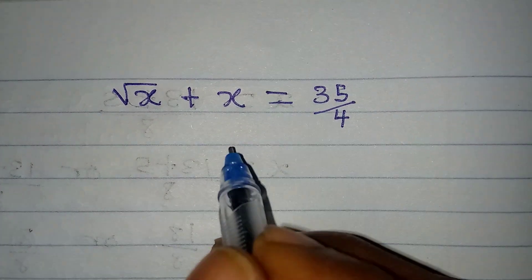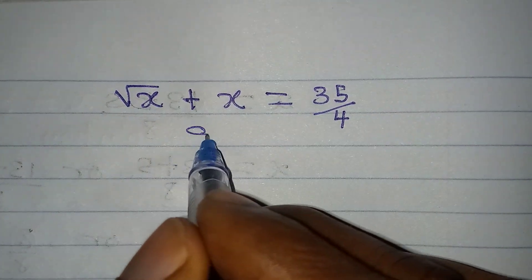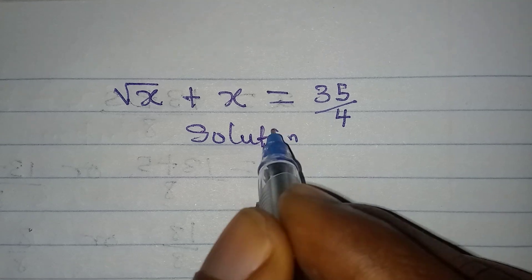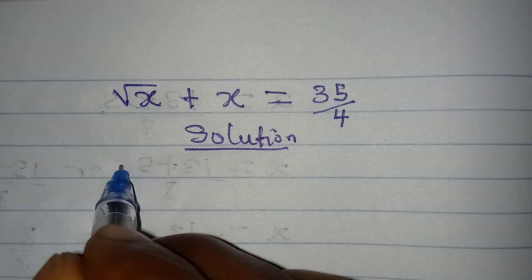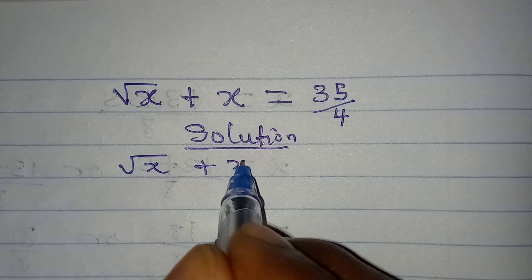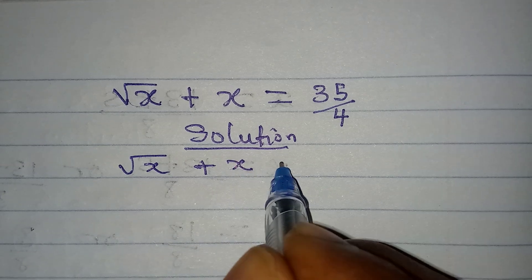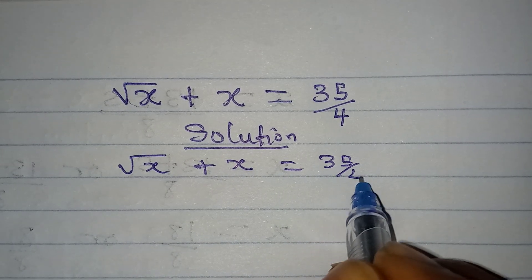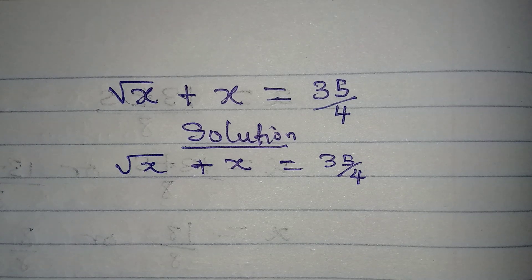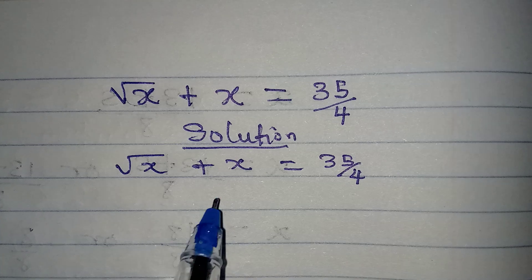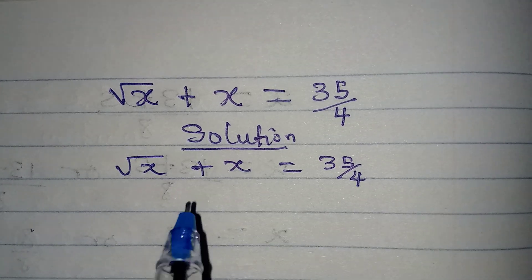Hello everyone, let's deal with this problem very quickly. We have square root of x plus x equals 35 over 4. The first thing is to move x to the other side.